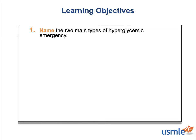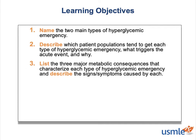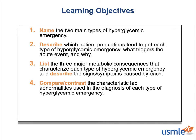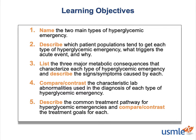By the end of this episode, you'll be able to: one, name the two main types of hyperglycemic emergency; two, describe which patient populations tend to get each type, what triggers the acute event, and why; three, list the three major metabolic consequences that characterize each type and describe the signs and symptoms caused by each; four, compare and contrast the characteristic lab abnormalities used in diagnosis; and five, describe the common treatment pathway and compare and contrast the treatment goals for each.